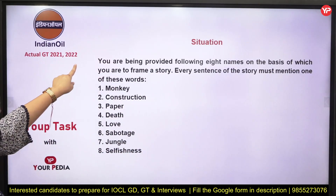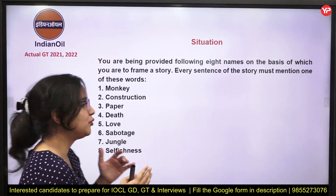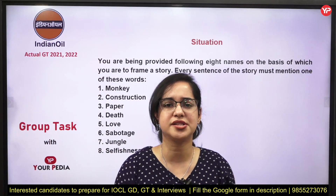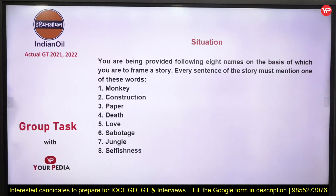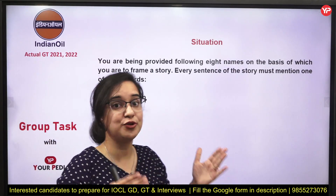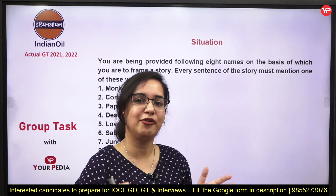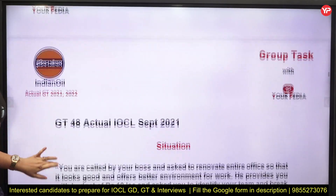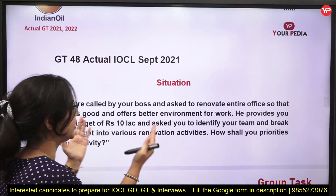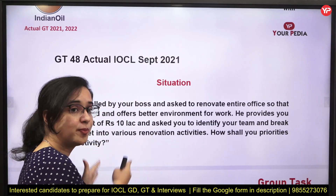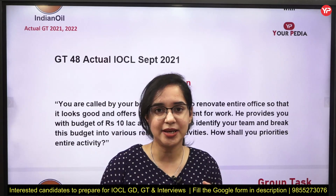You are provided eight words — monkey, construction, paper, death, love, sabotage, jungle, selfishness — and you have to build a story, choosing one word in every line. This is a very interesting and difficult one, requiring practice. Next: you are called by your boss to renovate the entire office with a budget of 10 lakh — what renovation activities will you prepare and how shall you prioritize spending on infrastructure versus aesthetics and ergonomics?